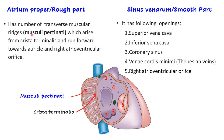The atrium proper or rough part has numerous transverse muscular ridges known as musculi pectinati, all arising from the crista terminalis and running forward toward the auricle and the right atrioventricular orifice. The sinus venarum or smooth part has openings for: superior vena cava, inferior vena cava, coronary sinus, the thebesian veins (vena cordis minimi — small openings), and the right atrioventricular orifice.